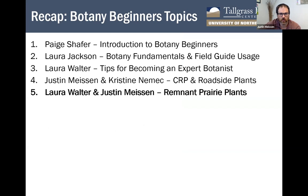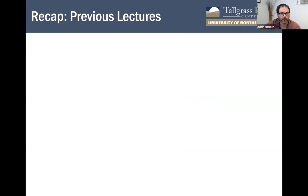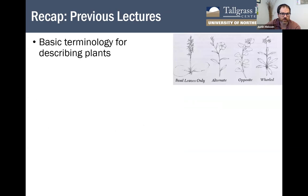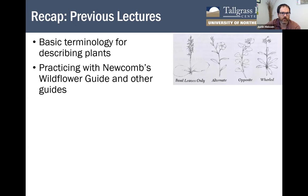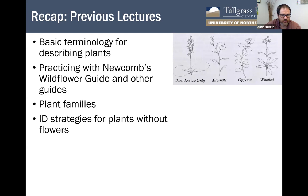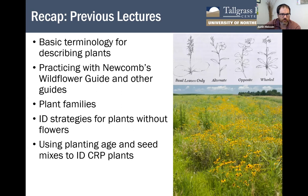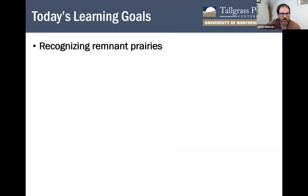Here's where we are in the course — this is the fifth of six lectures. Next week, Paige Schaefer will wrap up the course with continuing your botanical journey. In previous lectures we discussed basic terminology: describing flowers as irregular or multi-parted, leaf types, leaf edges, and leaf shapes. We used Newcomb's guide and other resources like Minnesota Wildflowers website, talked about plant families, strategies for plant ID without flowers, and using planting age and seed mixes as context clues to identify CRP plants.